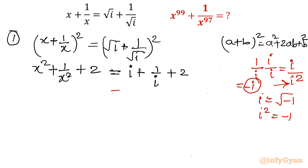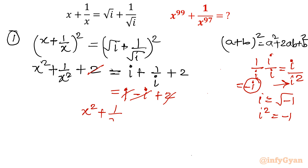Putting the value here: i minus i plus 2. The i and minus i cancel, and the 2 and 2 also cancel. So ultimately, x squared plus 1 over x squared equals 0. This equation is the most important.